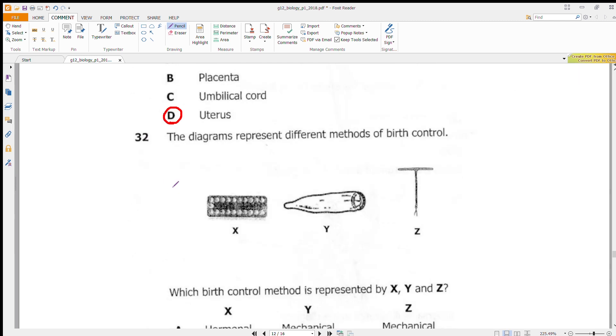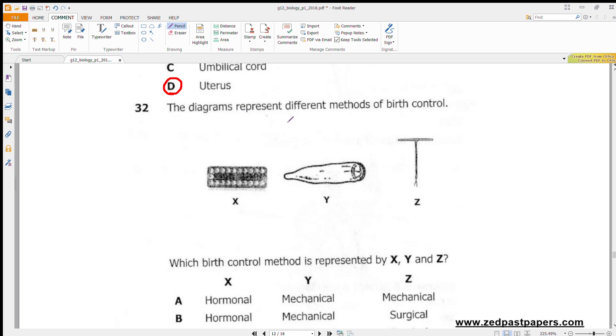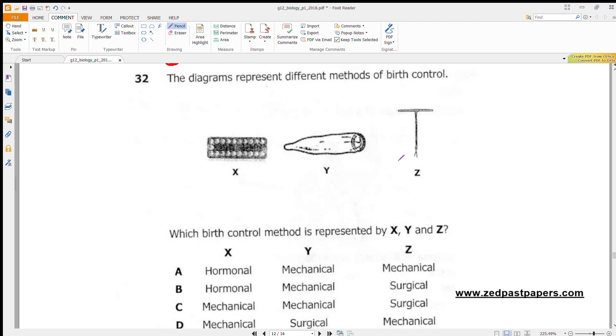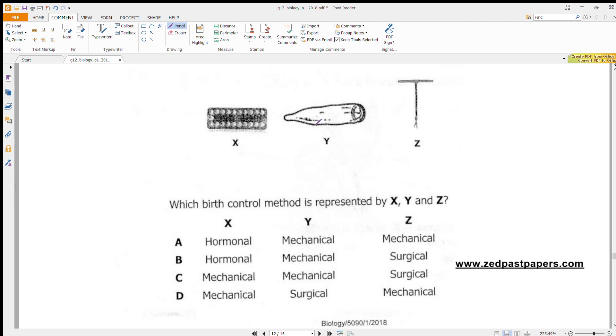Question 32: A diagram represents different methods of birth control. Which birth control method is represented by X, Y, and Z? X are tablets, Y is a condom, and Z is a cup. Mechanical birth control is where you put something hindering between the male sex cell and the female sex cell. These two prevent fusion, so they are mechanical. This one uses hormone, so it is hormonal. Answer is A.